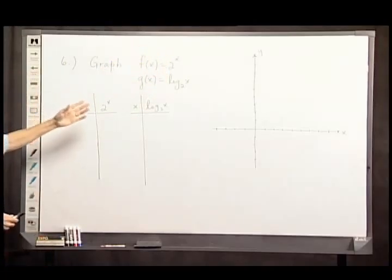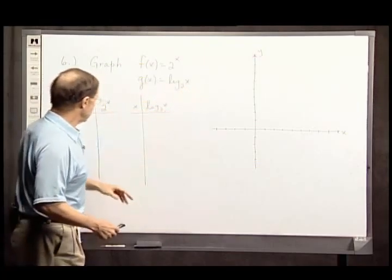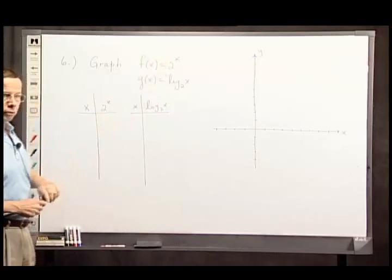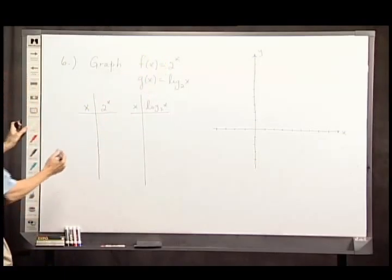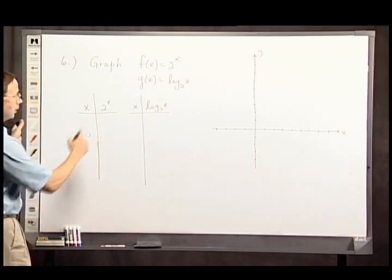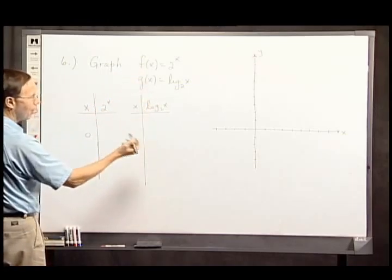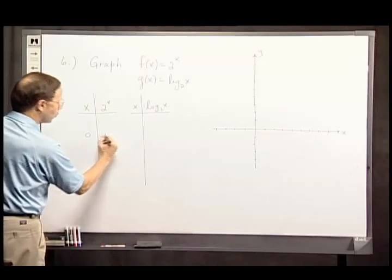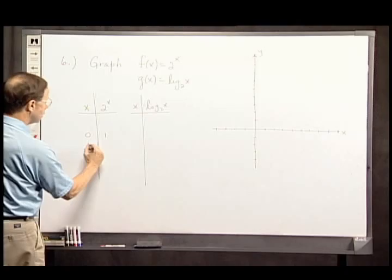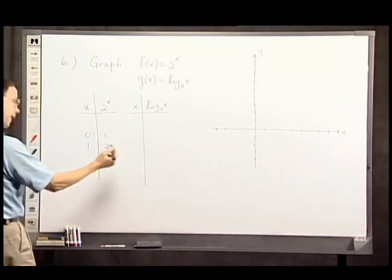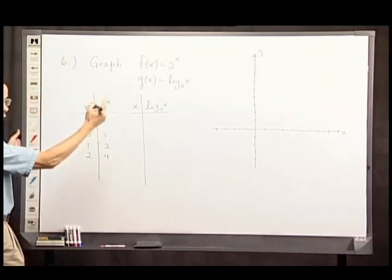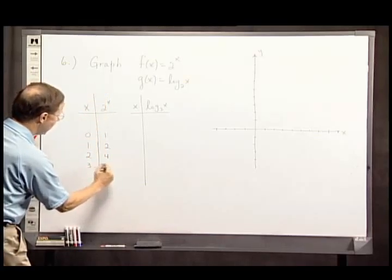What I'm going to do is, since I plan to graph these on the same graph, I'm going to plug in some convenient values for x over here, and I can start with 0. 2 to the 0 power, well, everything to the 0 power is 1. 2 to the 1st power is 2. 2 to the 2nd power is 4. 2 to the 3rd power is 8.